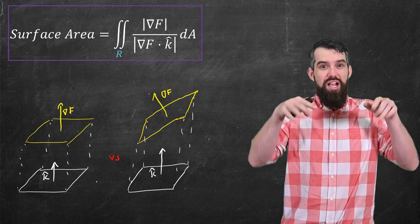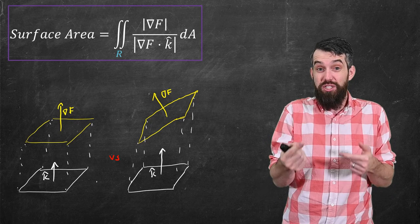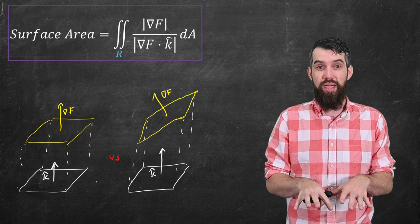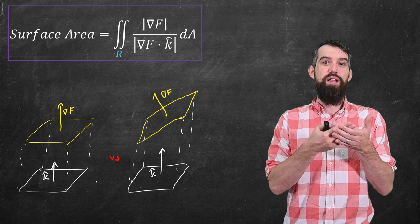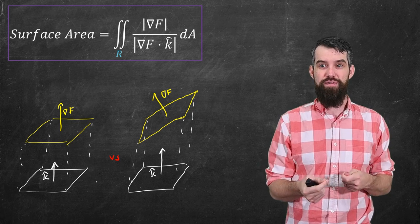But in the second that surface is now twisted, it would take more material to paper over that tilted surface than it would the underlying one in the domain. And so what we need to have is a stretching factor, and the gradient of F divided by the length of the gradient of F dotted with k hat gives us that stretching factor.